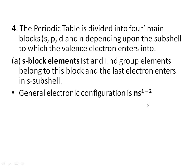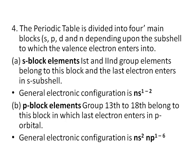The p block includes groups 13 to 18, where the last electron enters the p subshell. The general electronic configuration of p block elements is ns2 np1-6. Specifically: np1 corresponds to group 13, np2 to group 14, np3 to group 15, np4 to group 16, np5 to group 17. We can identify p block elements based on their outermost electronic configuration.